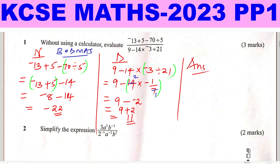Now it is time to get the answer. The numerator is negative 22, divided by the denominator which is 11. When you divide this you get negative 2 as the answer.